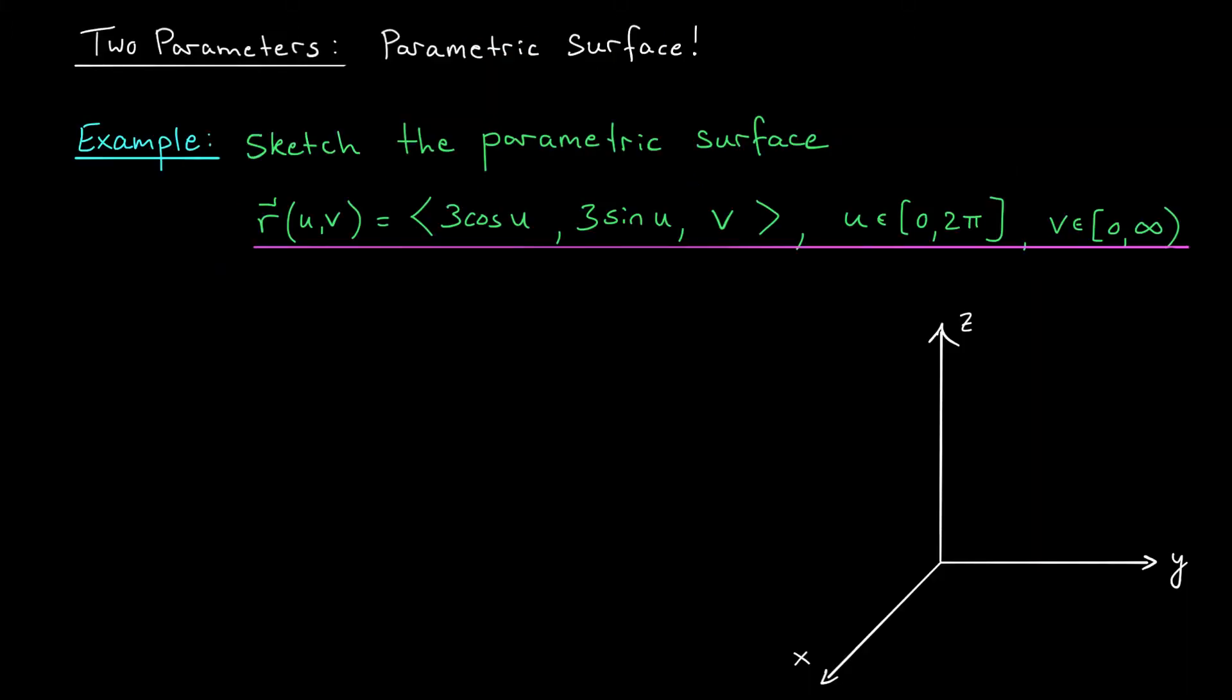Now, we know that a parametric equation, say, R of T, of just one parameter will sketch out a curved line in space. If we want to sketch out a whole 2D region, we're going to need a second parameter. So let's take a look at the following example, which involves two parameters, U and V.